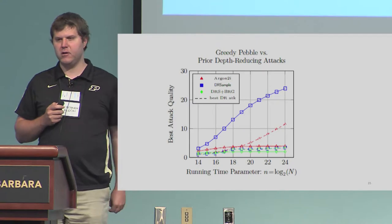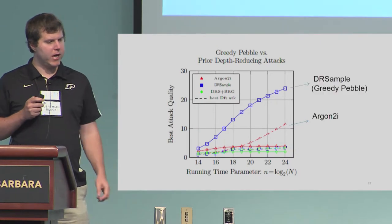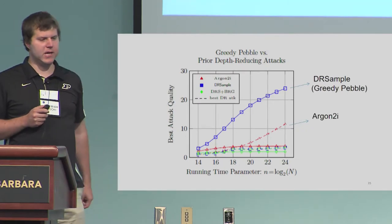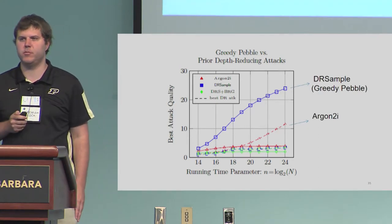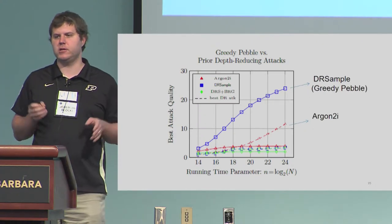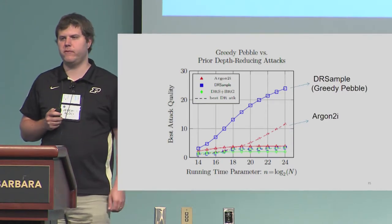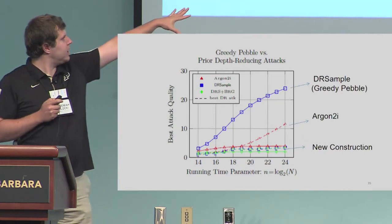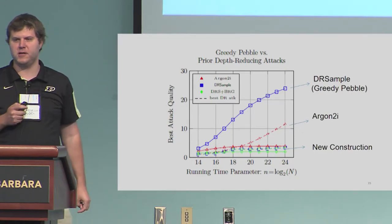If we redo the plot including the greedy pebbling strategy, here's Argon2i and here's attack quality versus DR sample. We have high-quality attacks against both, but even higher-quality attacks against DR sample — and this is even if we go all the way up to n equals 2 to the 24, which is on the higher end of what one might consider for parameter settings. Our new construction is down at the bottom of this plot — so we do find a way to fix the problem.